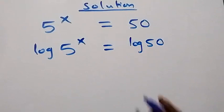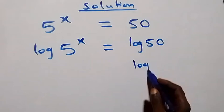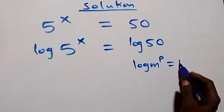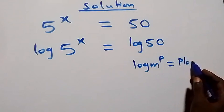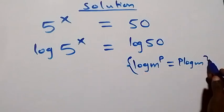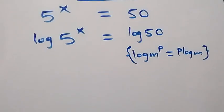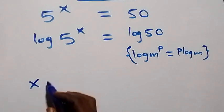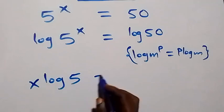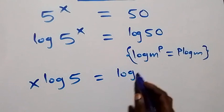From the power rule of logarithm, when we have log m raised to power p, this equals to p times log m. When we apply this here, the power is x, so this equation becomes x log 5 equals to log 50.